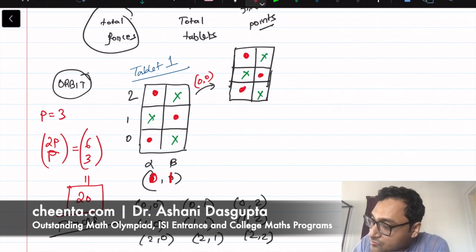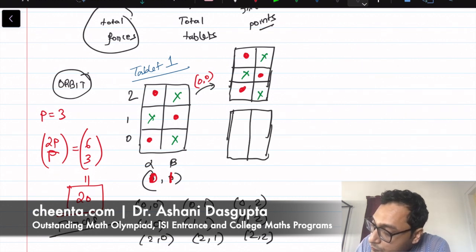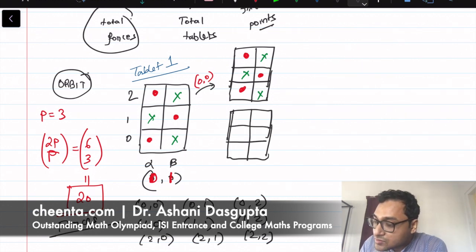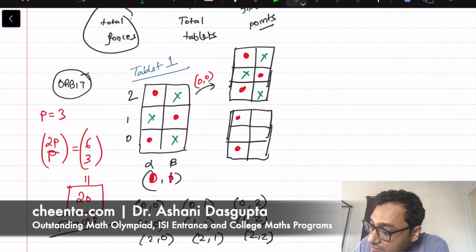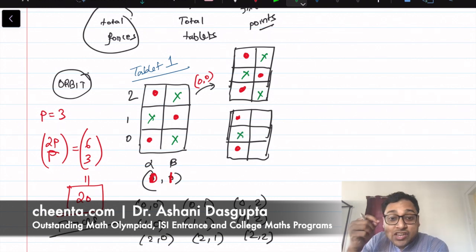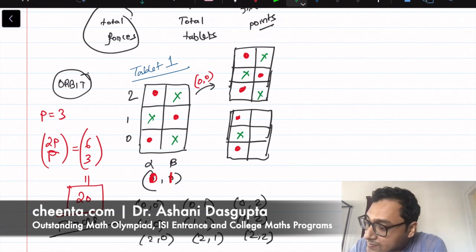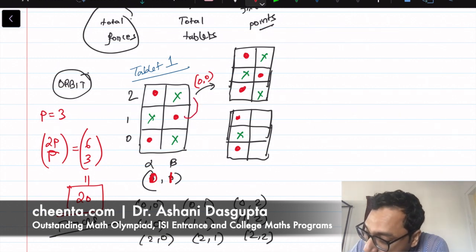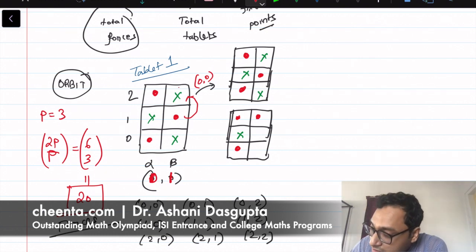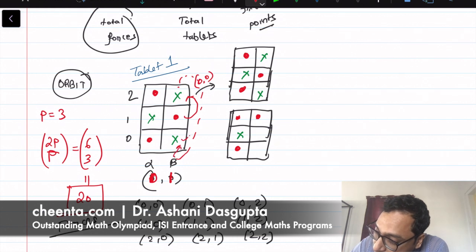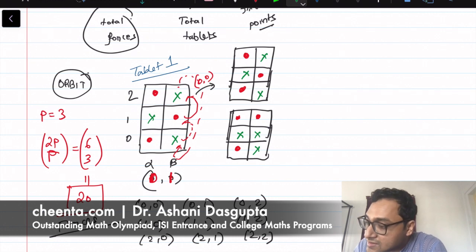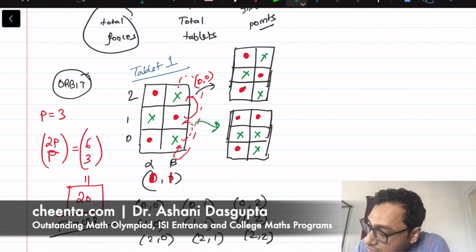What does the force (0,1) do? Let's draw that. We have another tablet. With (0,1), the first column does not change at all. In the second column, each element goes up by one unit. This one goes here, and it happens cyclically — so this particular cross comes back here, and this cross goes here. So we have the two crosses down here. This is the situation of (0,1).